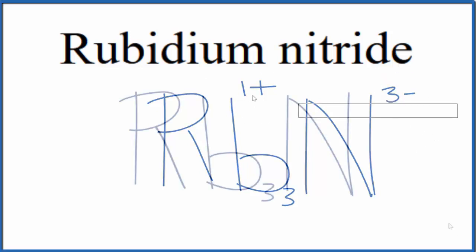So this is the formula for rubidium nitride, Rb3N. This is Dr. B, and thanks for watching.